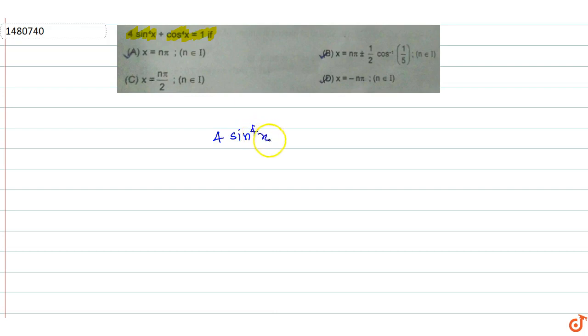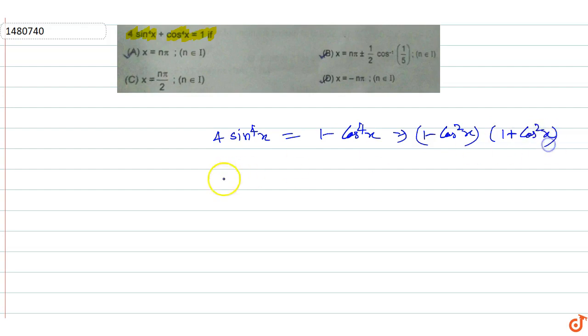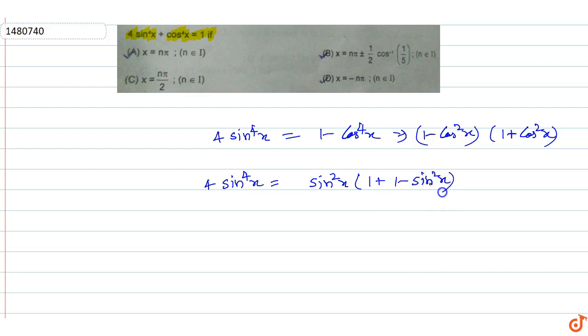We have the equation: 4 times (sin⁴x + cos⁴x) = 1. We rewrite: 4 sin⁴x = 1 minus cos⁴x, which factors as (1 minus cos²x)(1 plus cos²x). So 4 sin⁴x equals sin²x times (1 plus cos²x), and substituting 1 minus sin²x for cos²x gives sin²x times (2 minus sin²x).